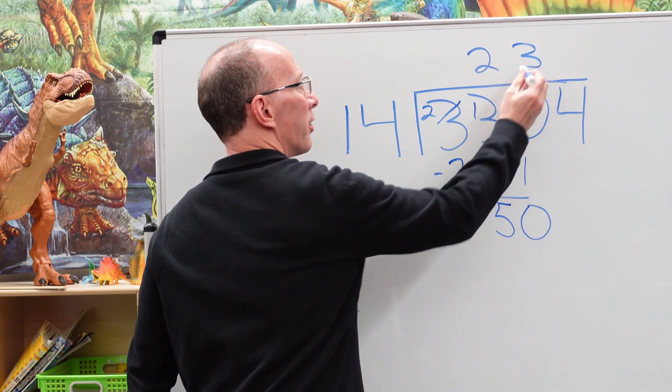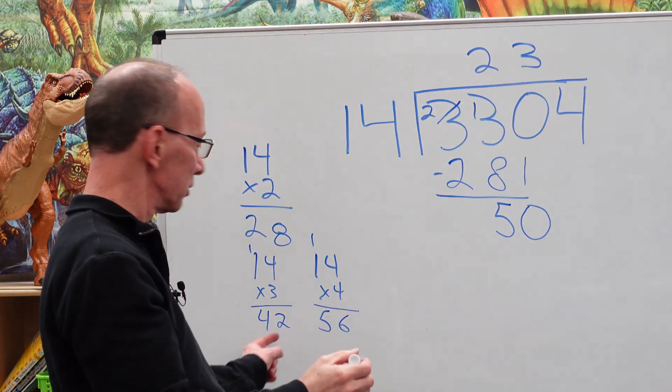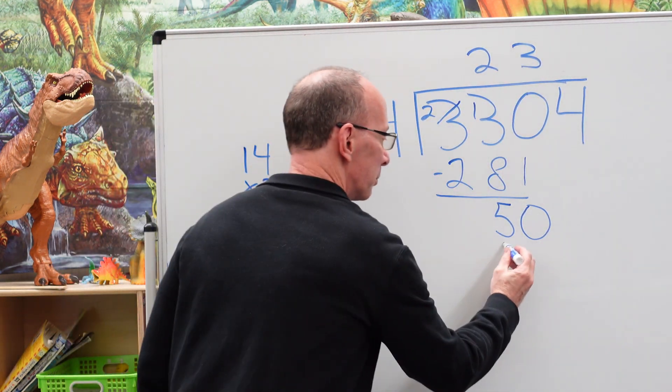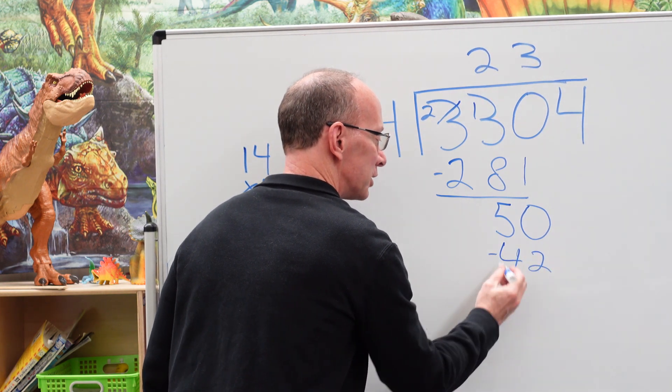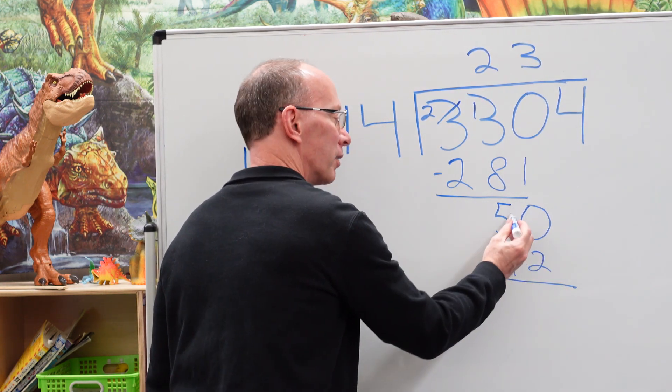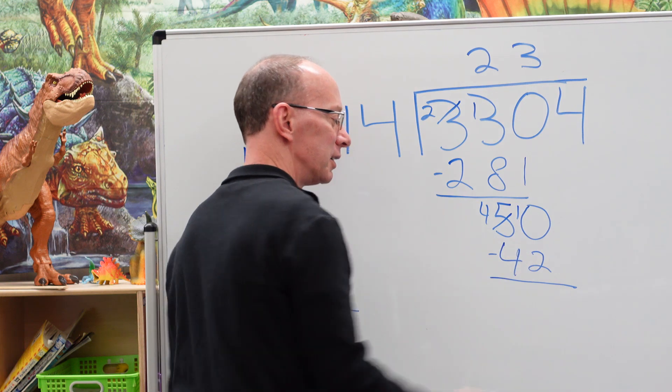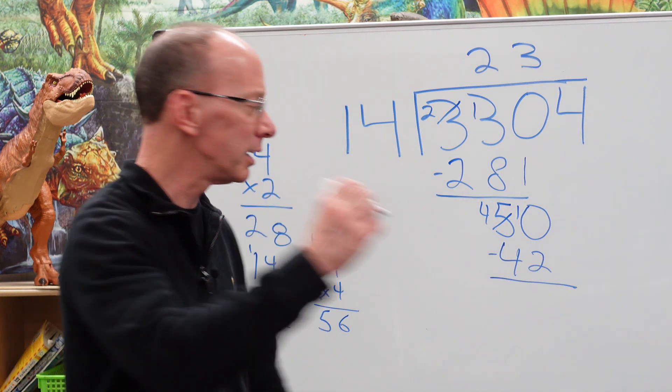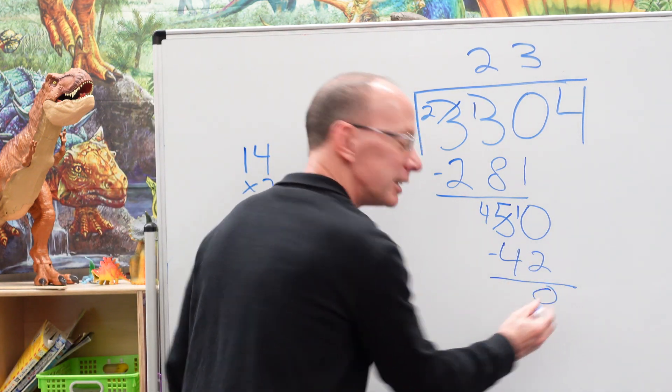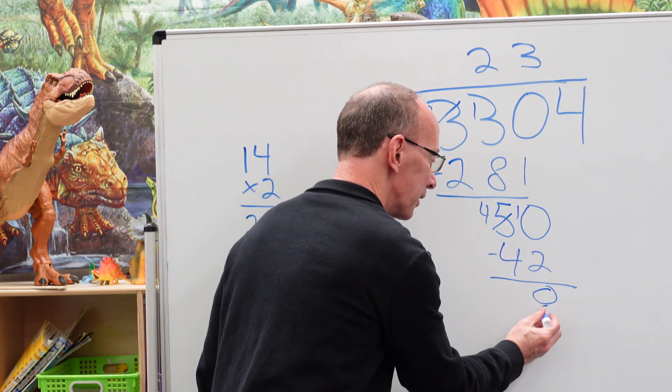So let's stick with the 3 right there. I'm going to put a 3 right here. 3 times 14 equals 42. Put it right here. 42. Subtract it. Need to borrow again. Put the 4 here. 10. 10 minus 2. What is it there? 8. 8 is always late.